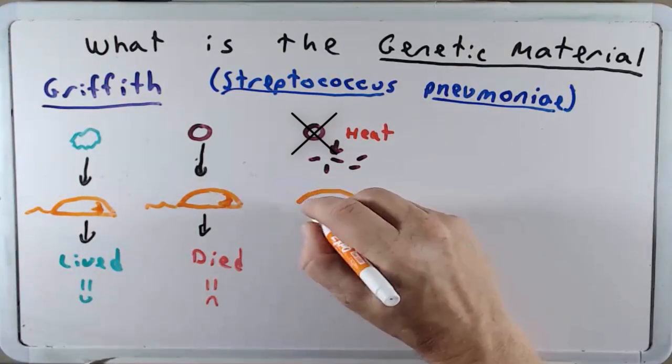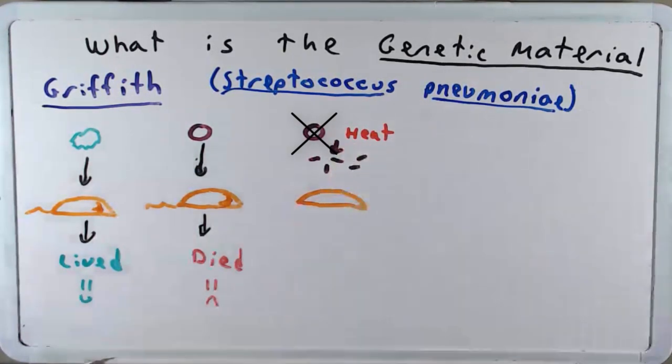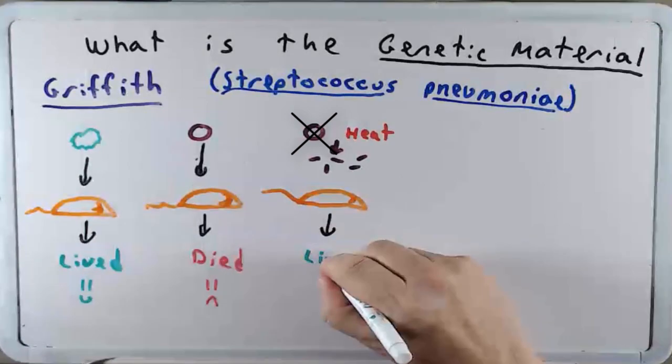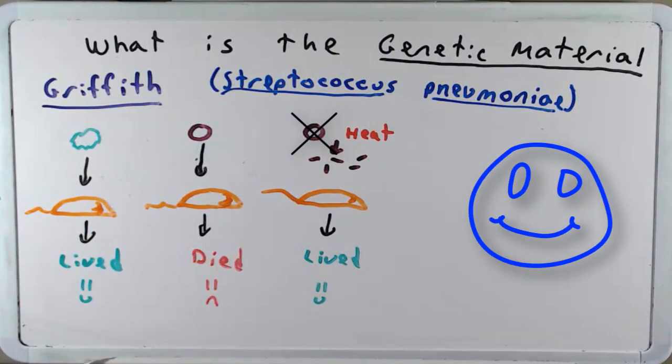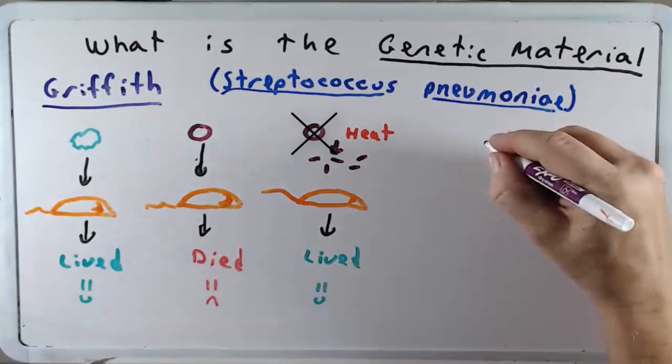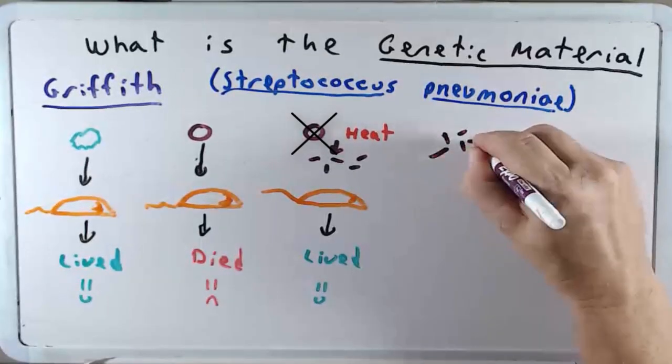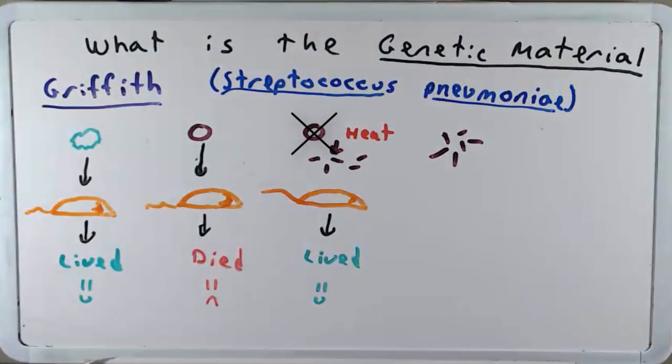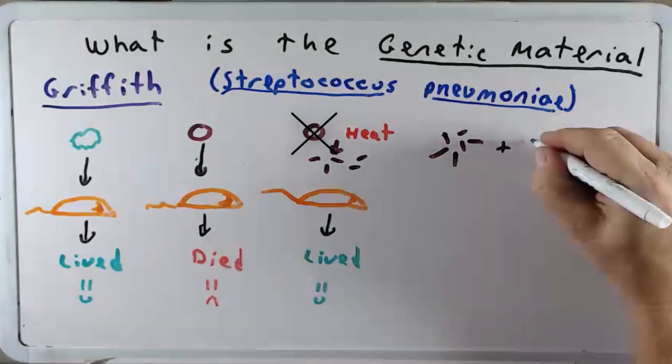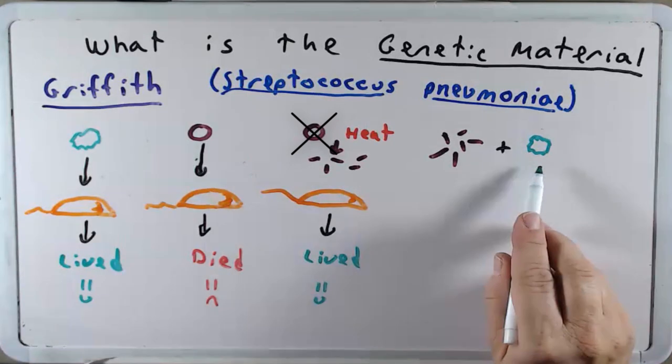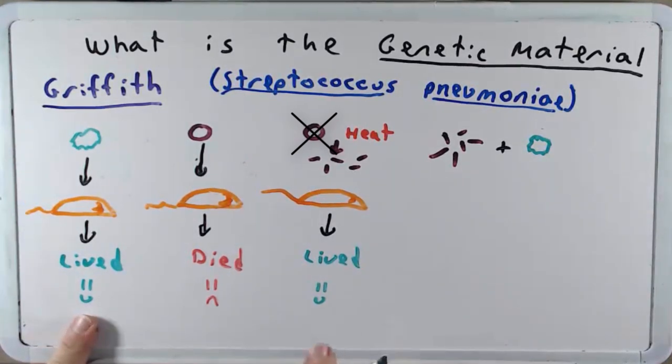He then took that heat-killed particles from the smooth bacterium and put that into the mouse. And the mouse lived. Next what he did was he took this heat-killed smooth bacterium and he mixed that with the rough bacterium. Both of these on their own, this first column and the second column allowed the mouse to live.